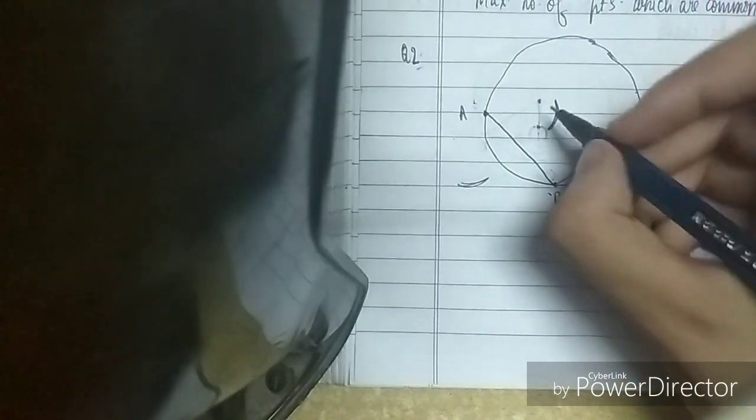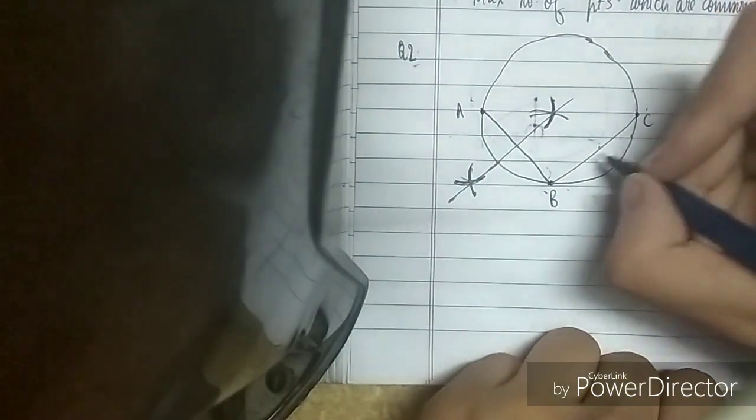This is chord AB and this is chord BC. Now I'll take the compass and open it a little more than half to draw the perpendicular bisector of AB. I'll keep the compass on A and put an arc here and here. On B, I'll put it and make an arc, and this is my perpendicular bisector.